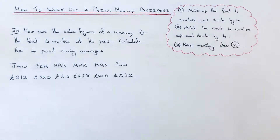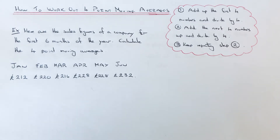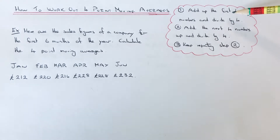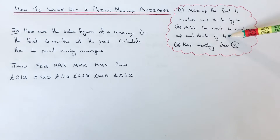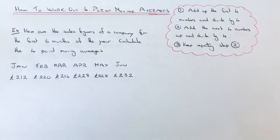Hi guys, welcome back. This is Maths3000. Today I'm going to show you how to work out the four point moving averages from a list of numbers. To do this you just need to follow the steps in the red cloud. The first step is to add up the first four numbers and divide by four. The second step is to add up the next four numbers and divide by four. Then the third step is to keep repeating step two, adding up the next four numbers and dividing by four, until you can't do any more four point moving averages.